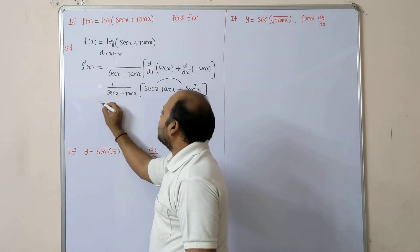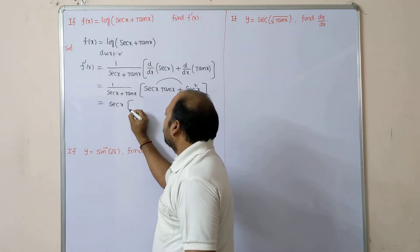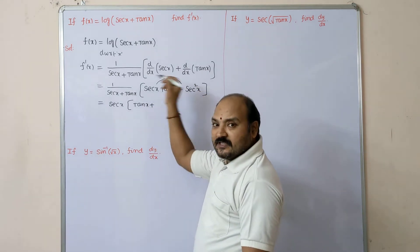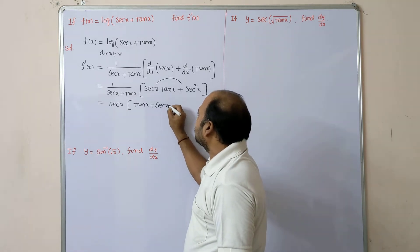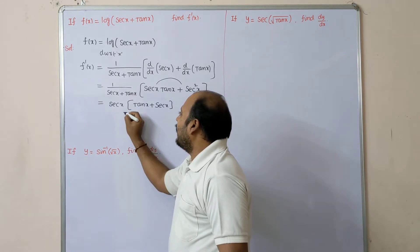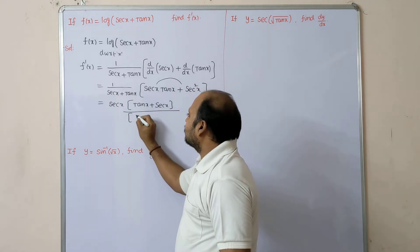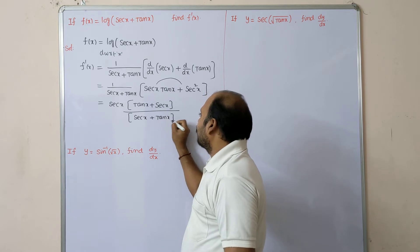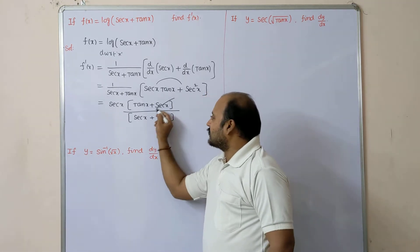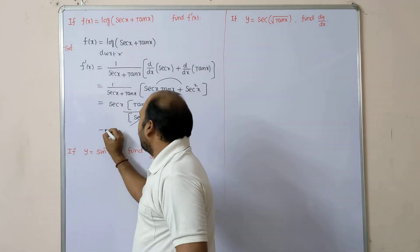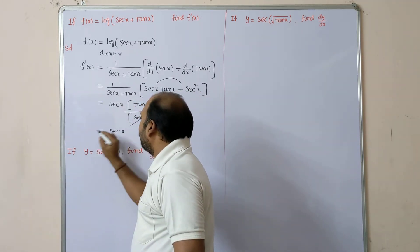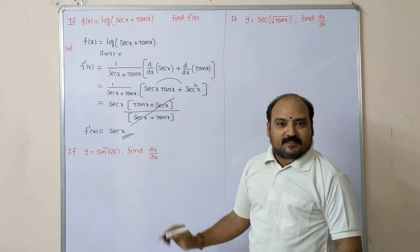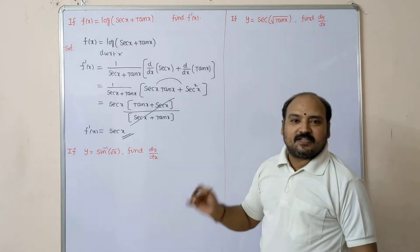From these two terms, take out sec x as common. The remaining terms are tan x + sec x. So we get: [sec x(tan x + sec x)] / (sec x + tan x). The (sec x + tan x) cancels, and the remaining is sec x. Therefore f'(x) = sec x. This is the way — step by step.